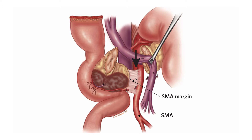To ensure the most complete resection possible, the right lateral aspect of the superior mesenteric artery should be dissected in its peri-adventitial plane from the caudal border of the uncinate process to the takeoff of the superior mesenteric artery from the aorta. This dissection should be conducted for all patients with adenocarcinoma, irrespective of apparent tumor distance from the SMA on imaging, because radiographically occult cancer cells often extend through retroperitoneal soft tissues toward the artery.